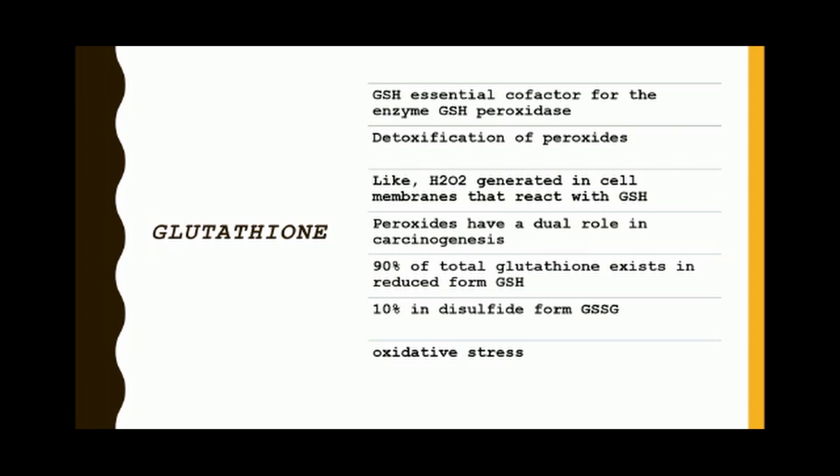Glutathione is also an essential cofactor for the enzyme glutathione peroxidase (GPX), which is involved in detoxification of peroxides, including the hydrogen peroxide generated in the cell membrane that reacts with GSH. Peroxides have a dual role in carcinogenesis. About 90% of total glutathione exists in reduced form GSH and less than 10% in disulfide form GSSG.